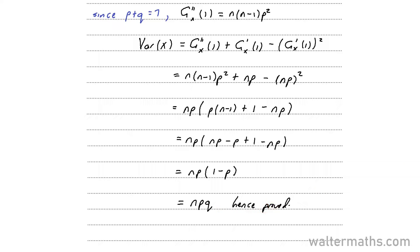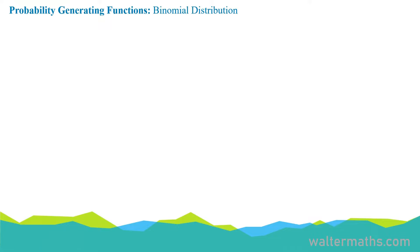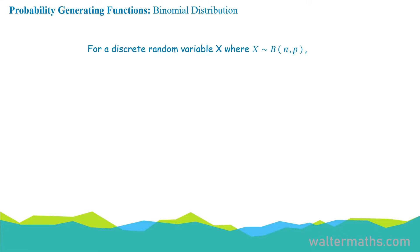So this is how we do it. The main takeaway from this is that for a random variable X where X follows a binomial distribution of N and P, the probability generating function is given by G of T equals Q plus PT to the power of N, where Q is equal to 1 minus P.